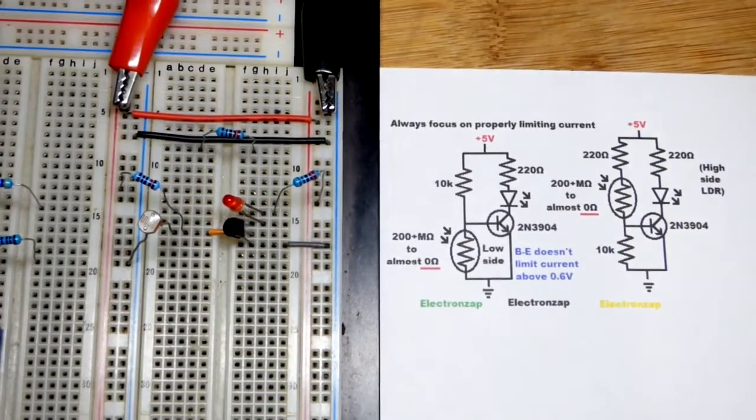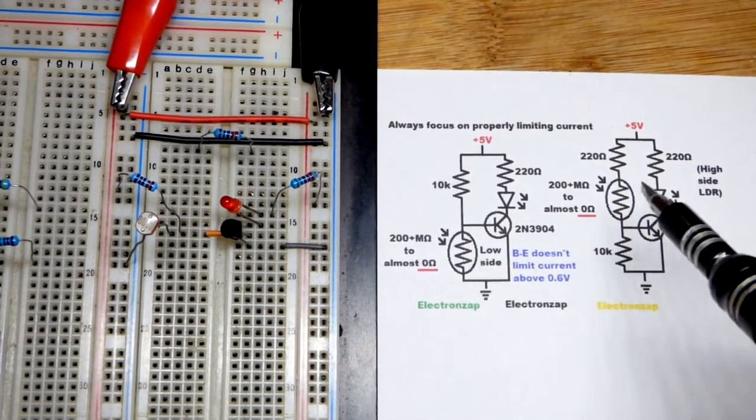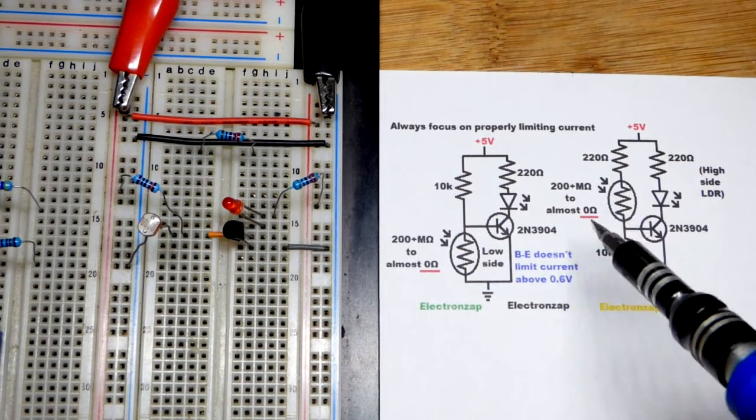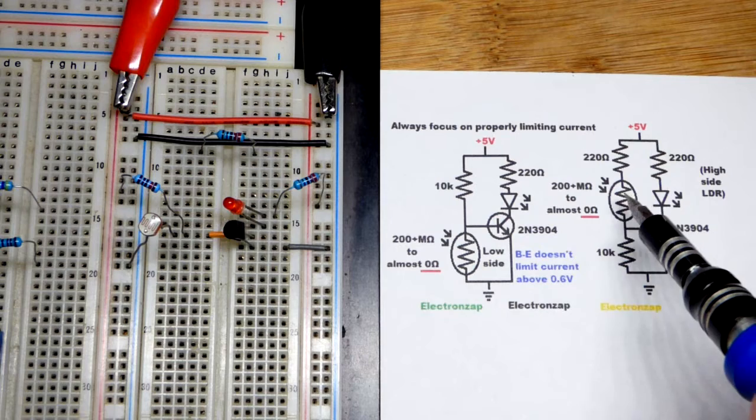So we're going to go back now, we're going to put the light dependent resistor on the high side. It's a good idea indoors—we don't really need it—but if you get enough light on the light dependent resistor,